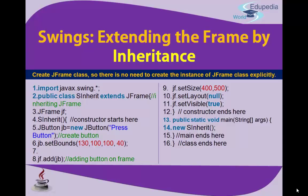Line 11 says jf.setVisible(true). This is a very important line and function used to display the JFrame. true is the boolean value — if you set it to false, the form will not be displayed but the program will still be running. If you want the frame to be displayed, set this property to true. Line 12 shows the constructor ends here.